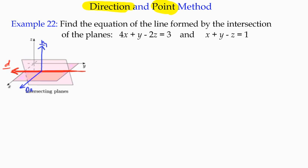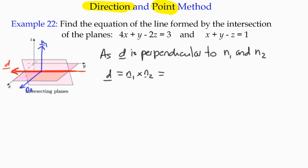We can say that as d is perpendicular to n1 and n2, then d equals n1 cross n2, in other words, our vector product. We can get that from the magnitude of the two vectors. We've got 4, 1, -2 is the normal vector of one of them, and then 1, 1, -1 is the direction vector of the other vector. If we work that out, we've got something times i minus something times j plus something times k.